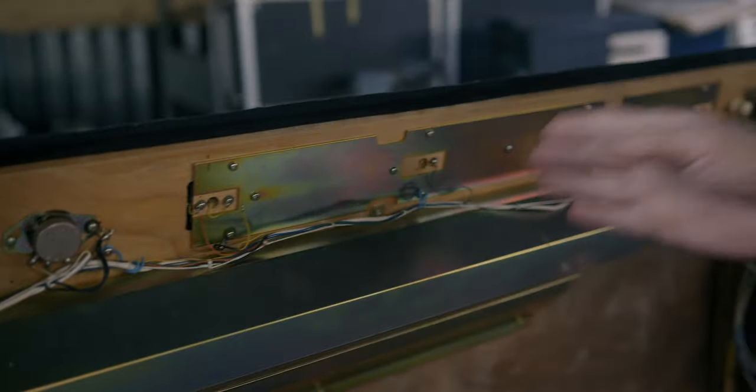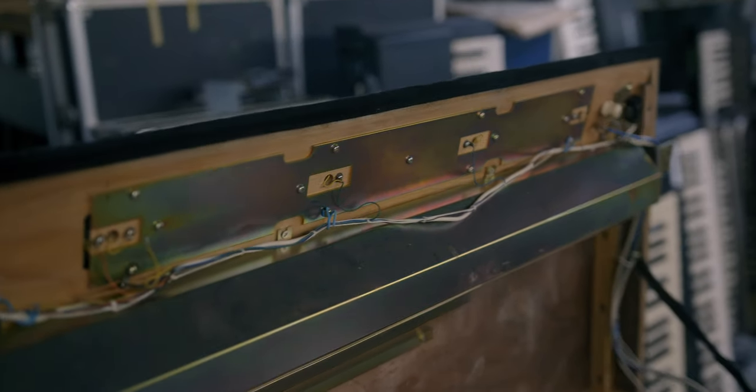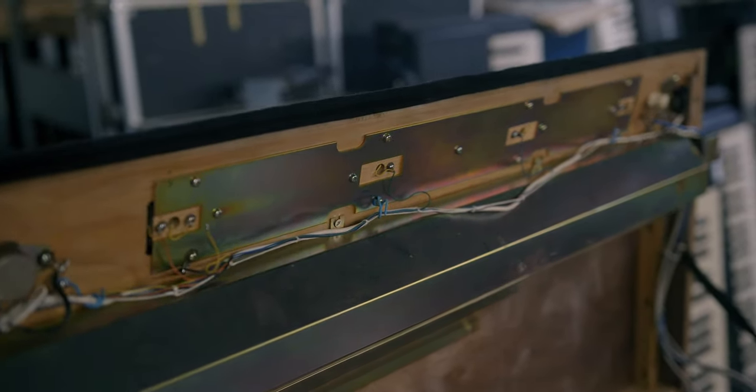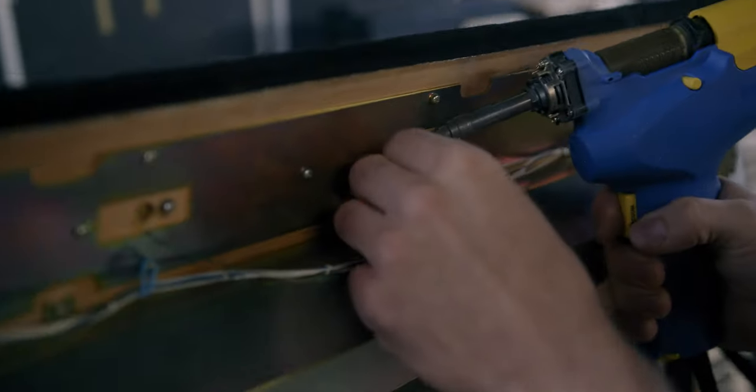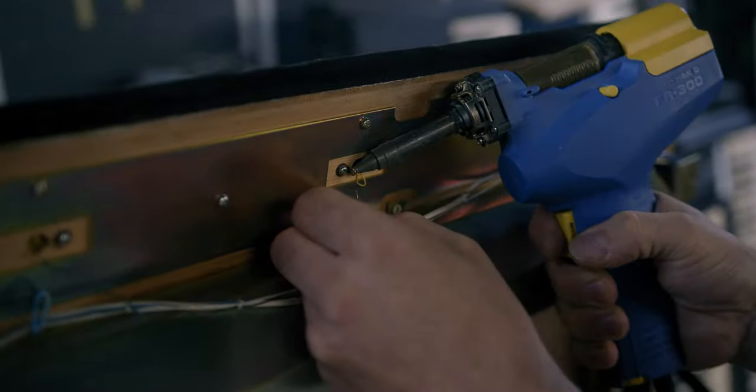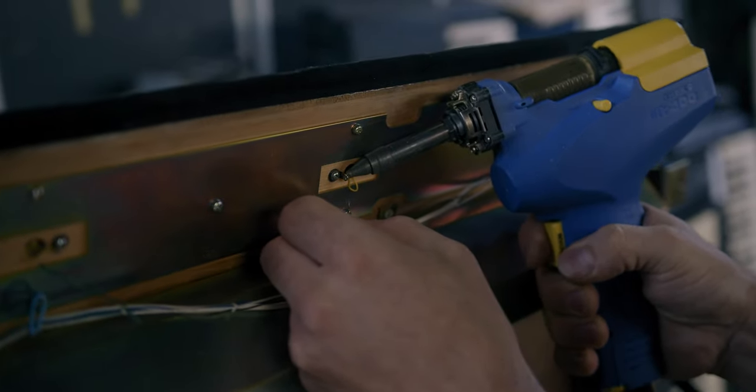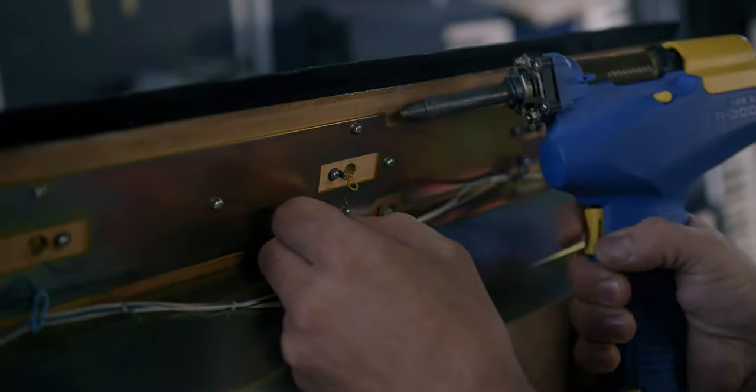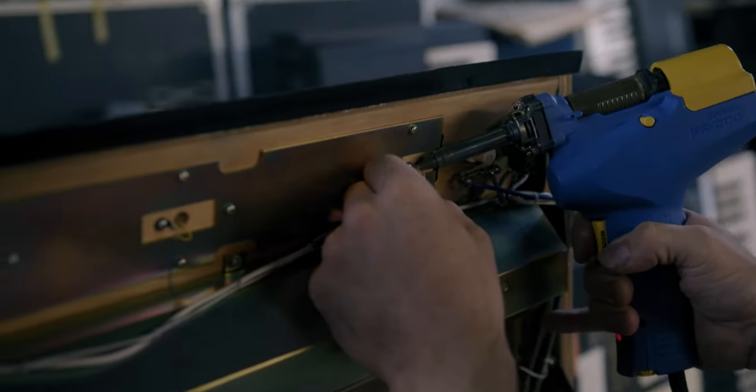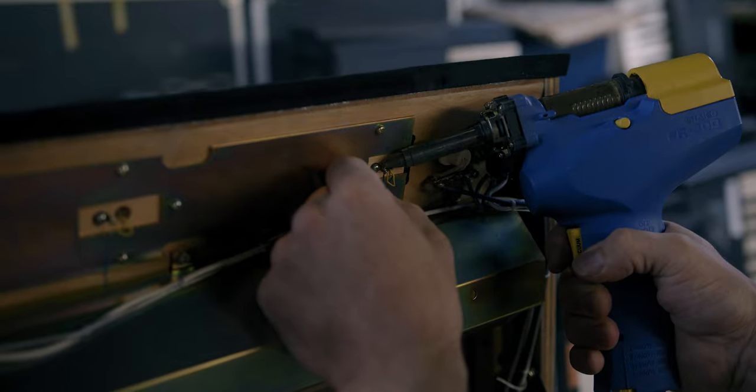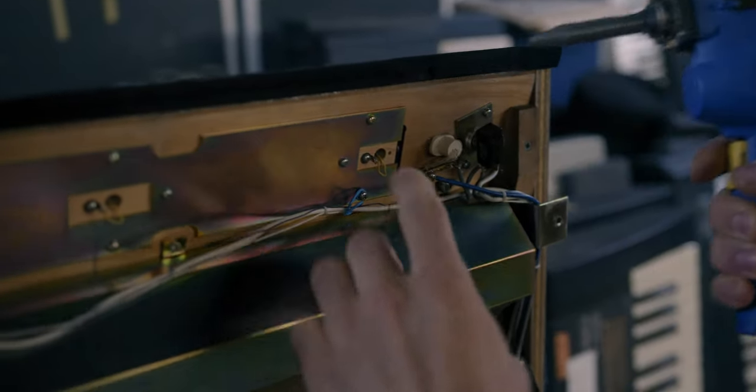Or you could write that down and then the rest of them are pretty self-explanatory when it goes back in. It's good to open up that terminal so you can put the wire back in and bend it over for a physical contact as well as a solder.